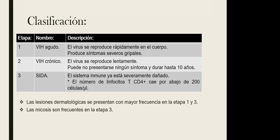Hay distintas clasificaciones del VIH basadas en el conteo de linfocitos. Si es menor a 200 ya se considera estadio 3. Dependiendo de si presenta síntomas o no, se divide en A, B o C: A sería una infección asintomática, B una infección sintomática, y C sería el síndrome de inmunodeficiencia adquirida, el SIDA, con conteo por debajo de 200 —esto sería C3.